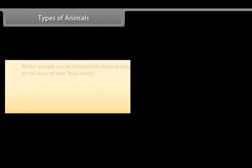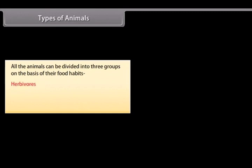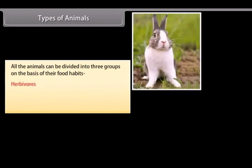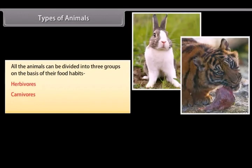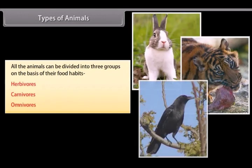All the animals can be divided into three groups on the basis of their food habits: herbivorous, carnivorous, and omnivorous.